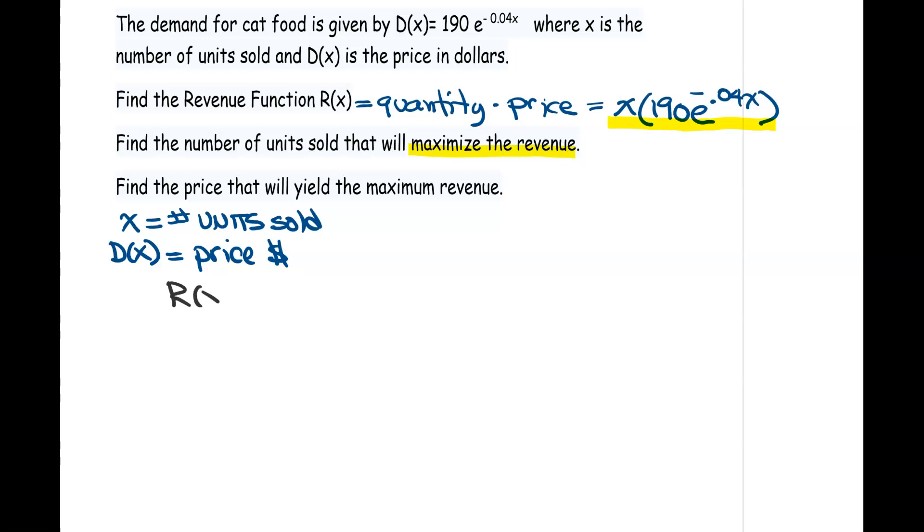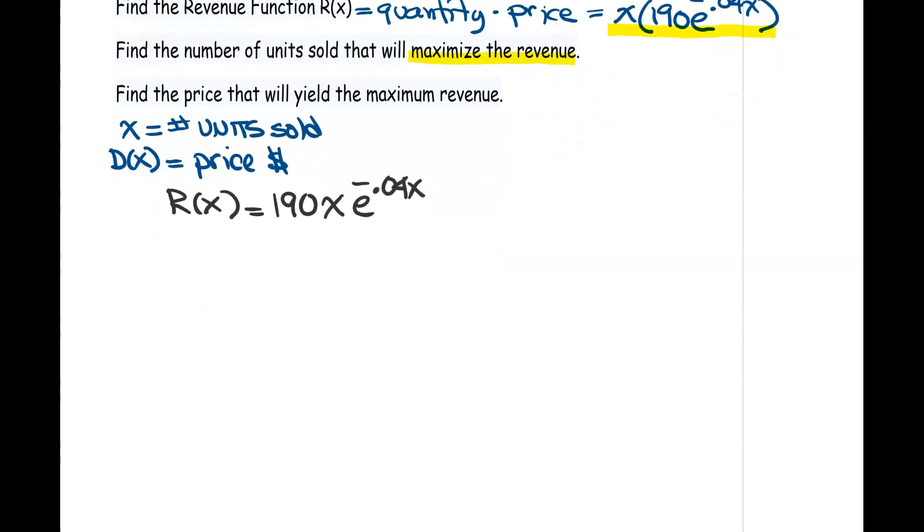So let me start with my revenue function here. In order to do our derivative, I'm just reordering this, 190x and then our e^(-0.04x). To take the derivative of this function, just notice that we have a product. I'll call this our f and this our g. So we're going to have to use our product rule in order to get the derivative.